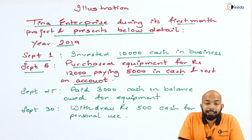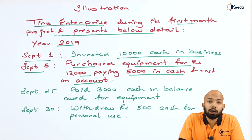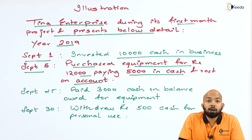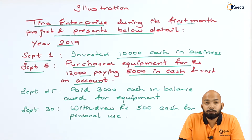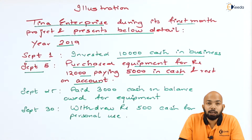On September 5th, they purchased equipment worth ₹12,000, out of which ₹5,000 was paid in cash and the rest is on account payable — meaning on credit, to be paid later. An asset is coming in, so the entry will reflect part payment in cash of ₹5,000 and the remaining ₹7,000 as accounts payable.